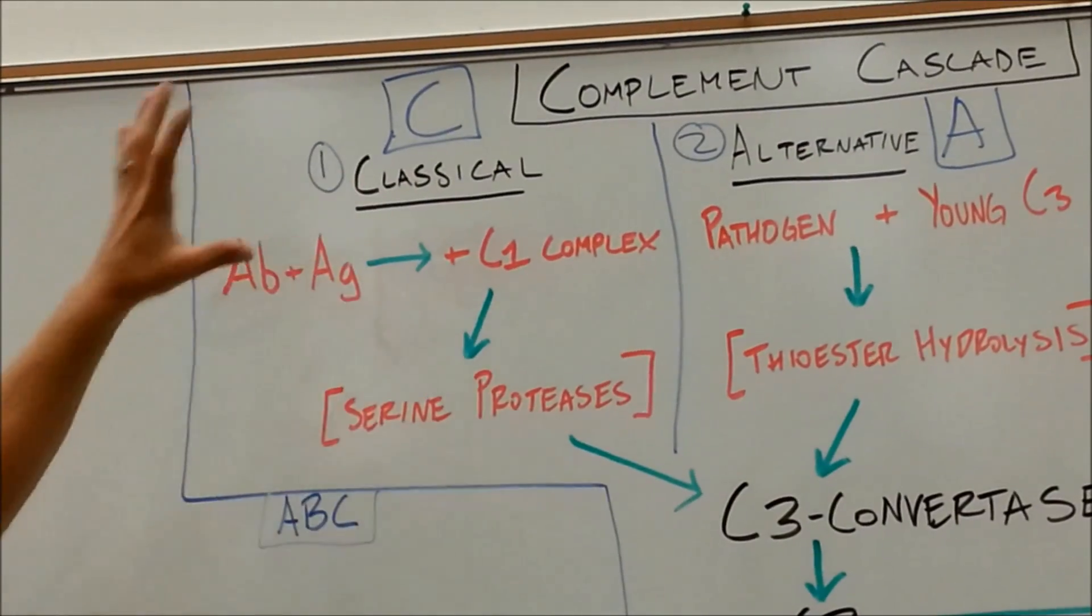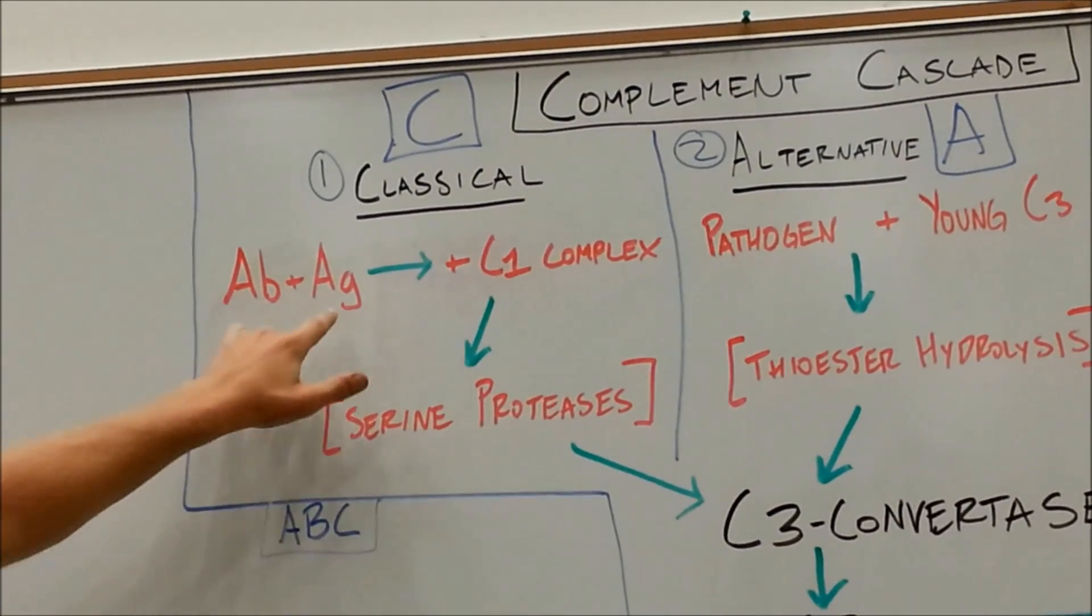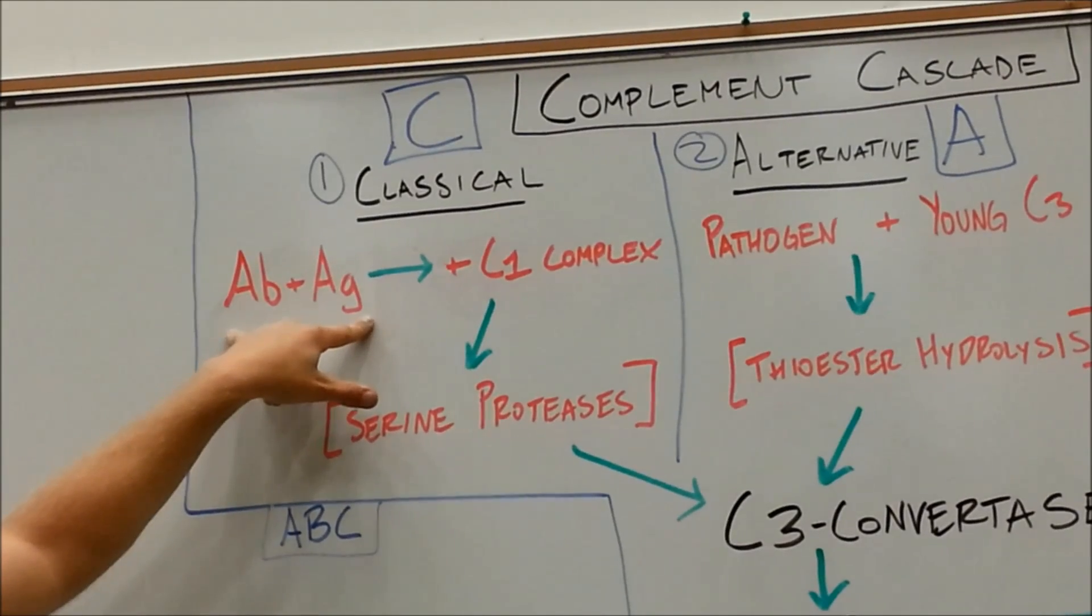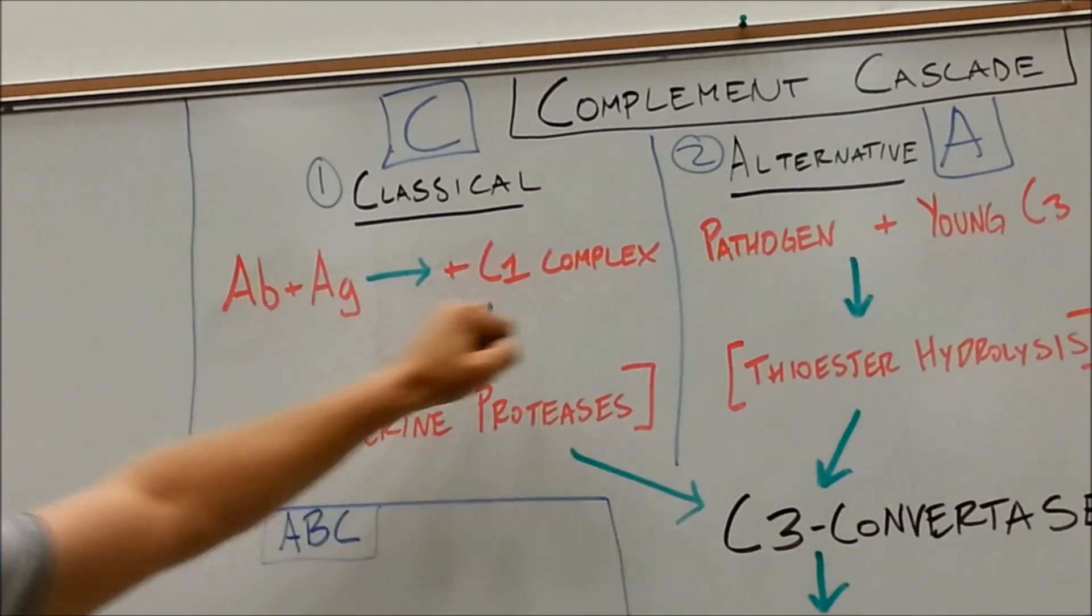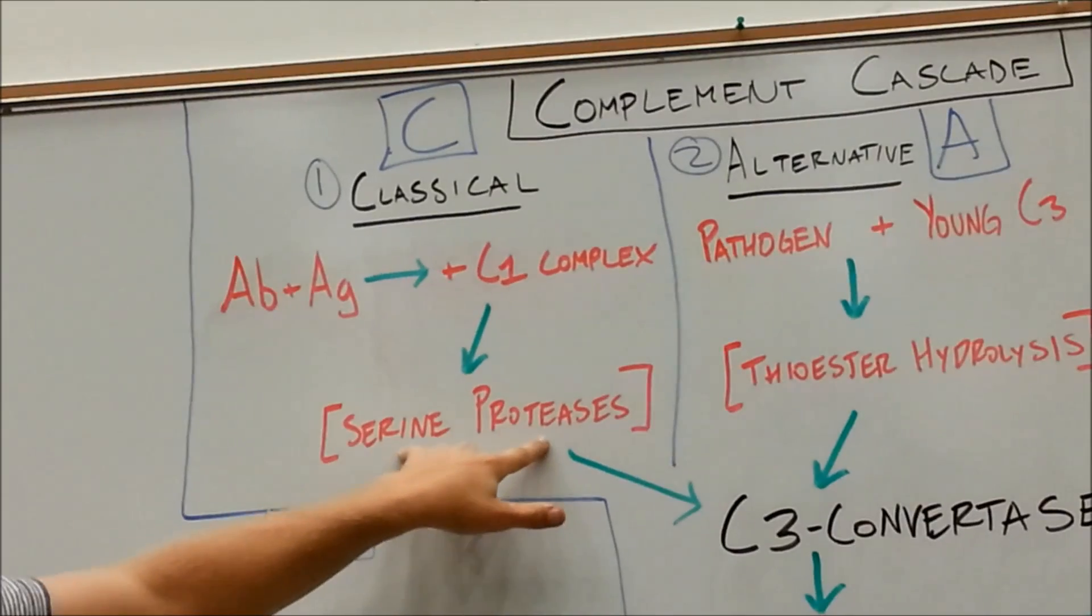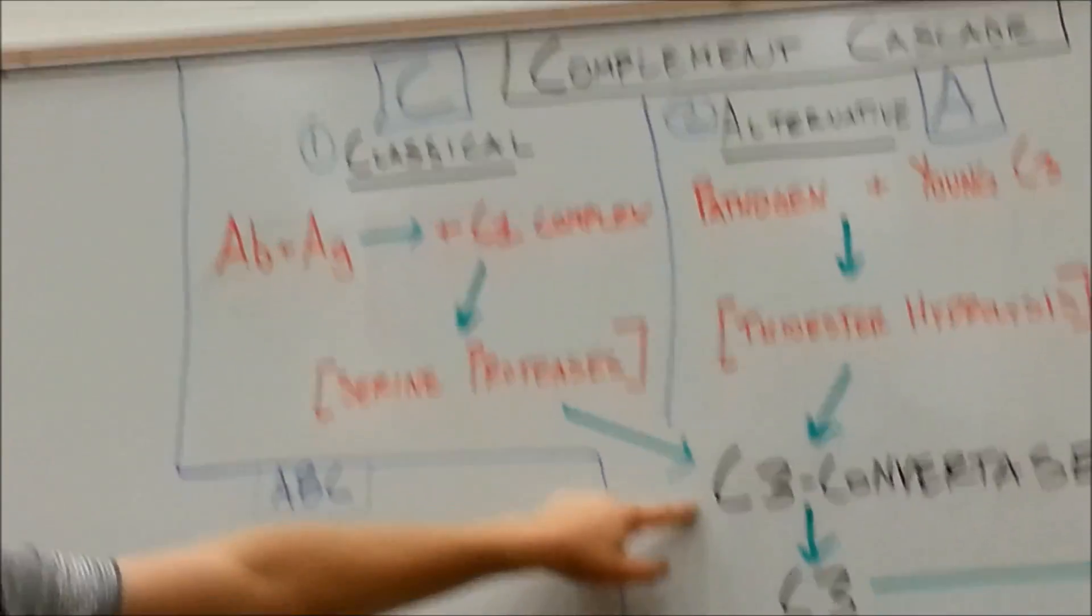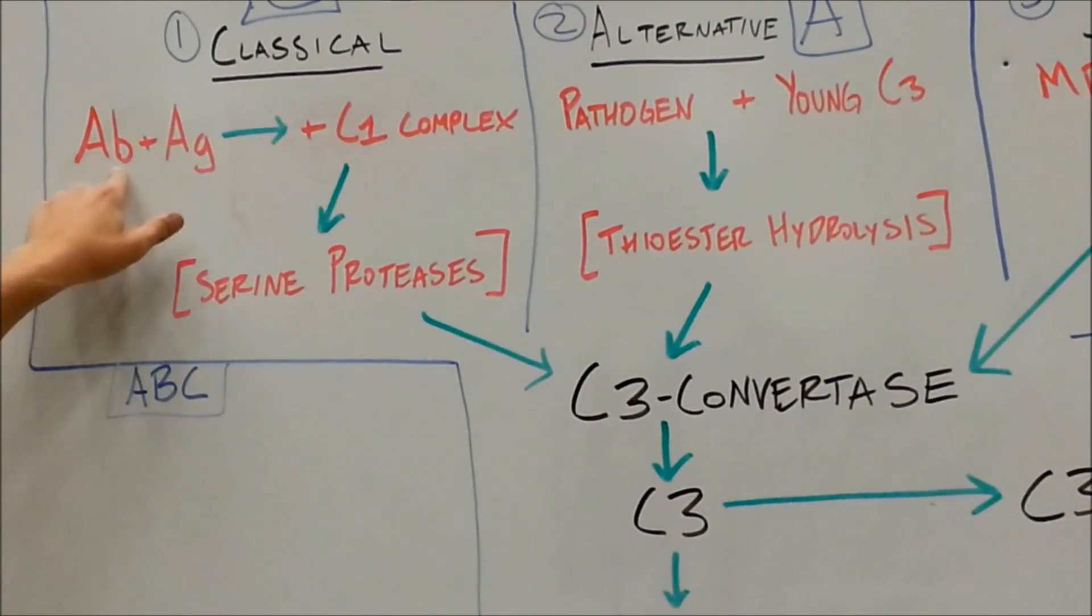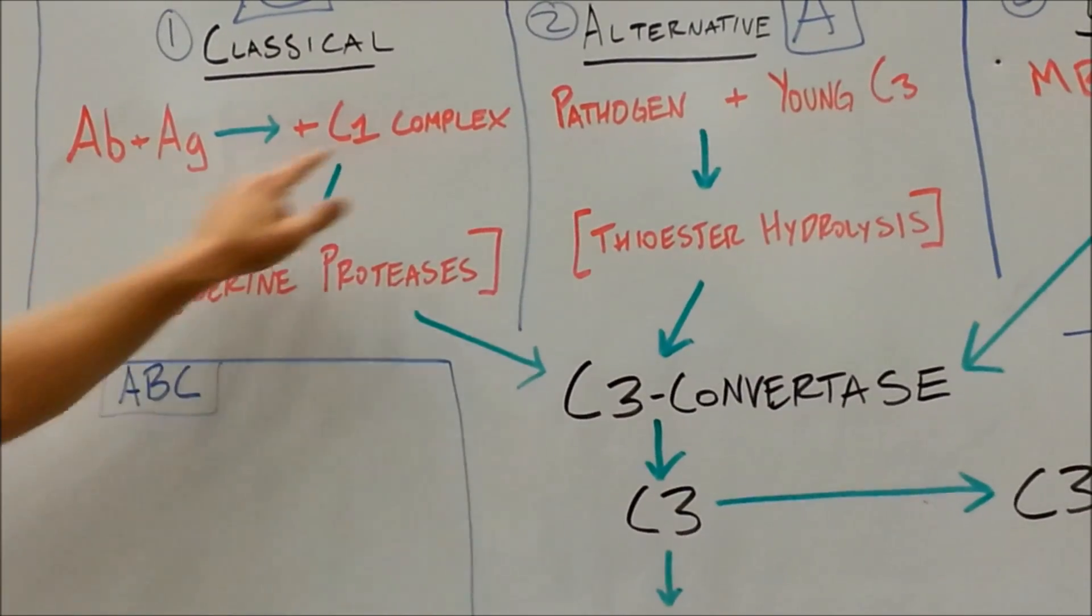The gist of this classical pathway is A-B-C. Now, all that occurs is an antibody attaches to an antigen, just like what happens constantly in immunology. You've heard of that before. Antibody plus antigen, that then attracts and adds to the C1 complex, which through some magical serine proteases, some enzymes, gets us to C3 convertase. So this mnemonic, A-B-C for classical, is A-B for your antibody, C for your C1 complex. A-B-C.